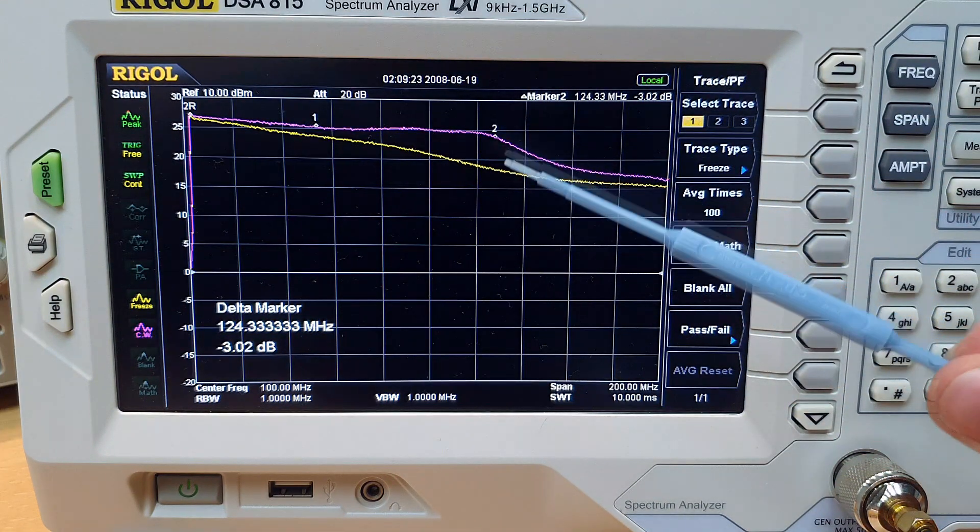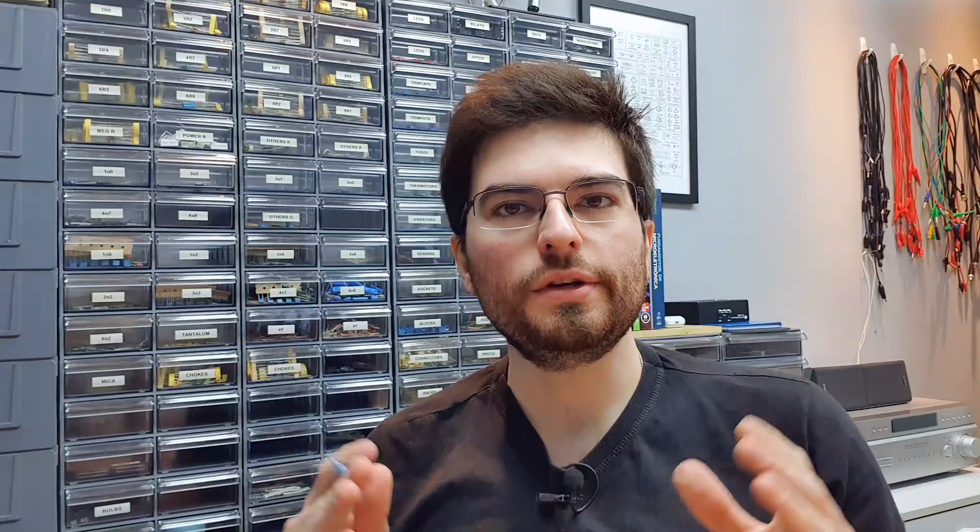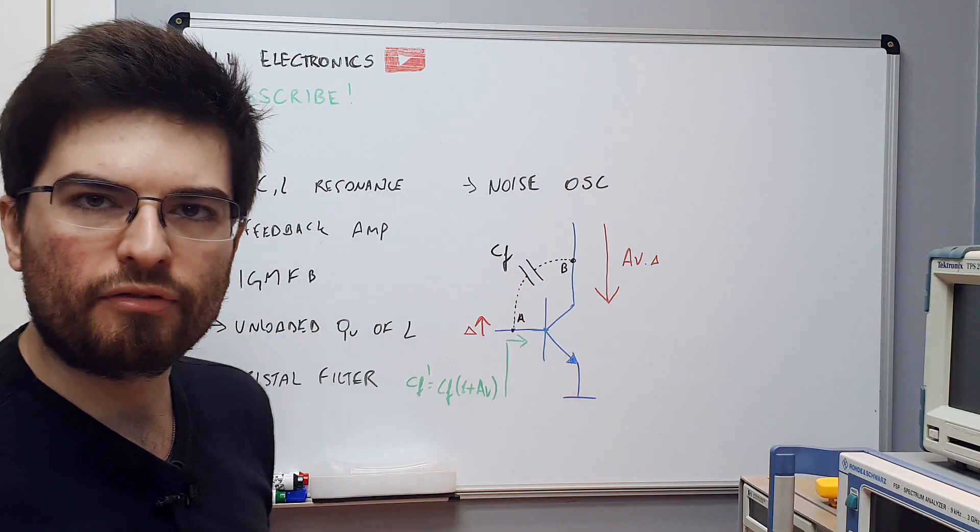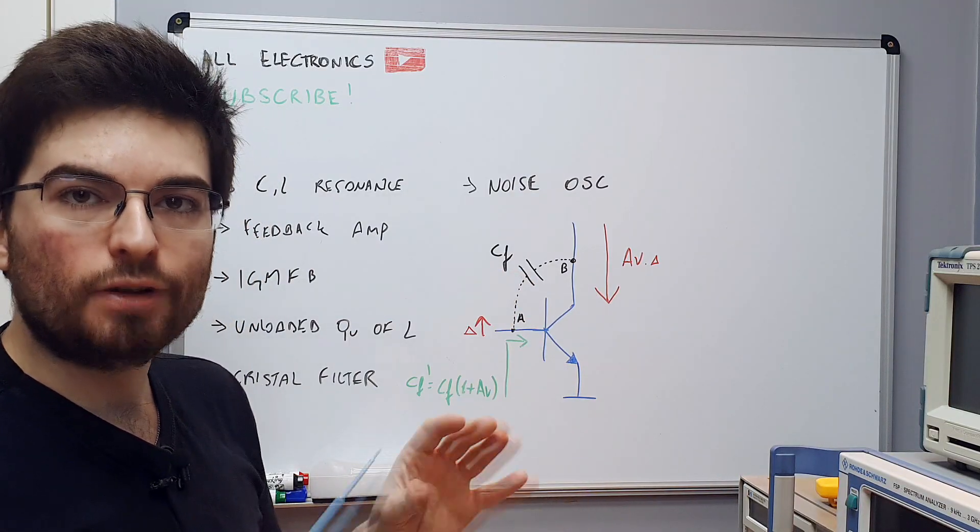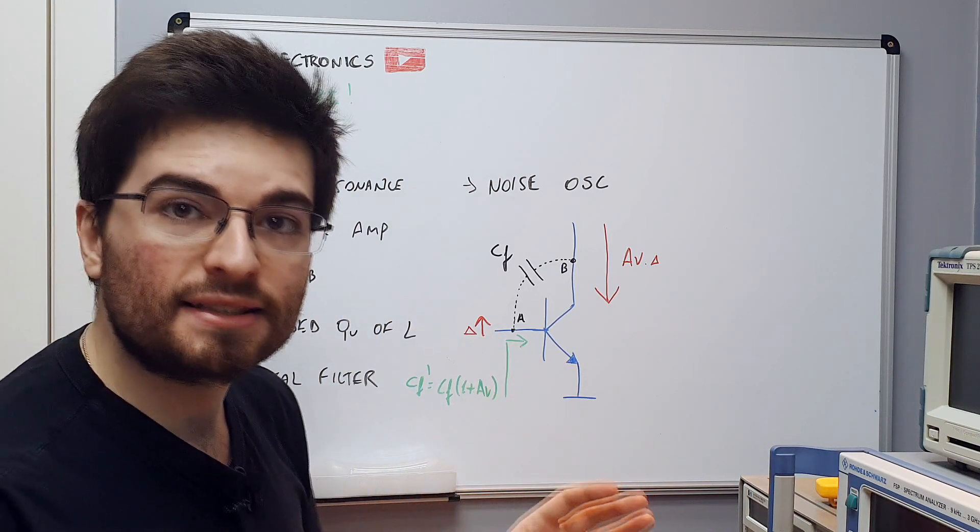So what we are seeing here in this screen is the gain versus frequency of the stage. Using two traces we can see the difference of the amplifier with and without the neutralization technique. We saw that the bandwidth more than doubled. Let's go to the whiteboard to understand how it works and why the neutralization technique can increase the bandwidth. The bandwidth of a common emitter amplifier is mainly limited by the dominant pole generated by the Miller effect.